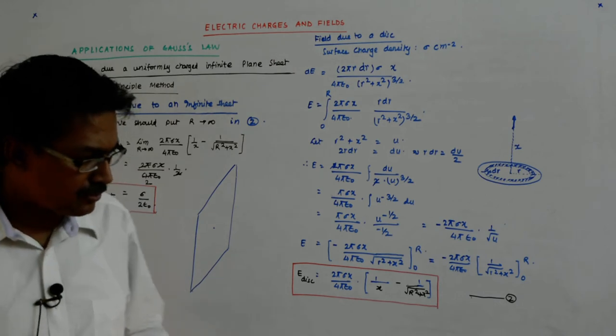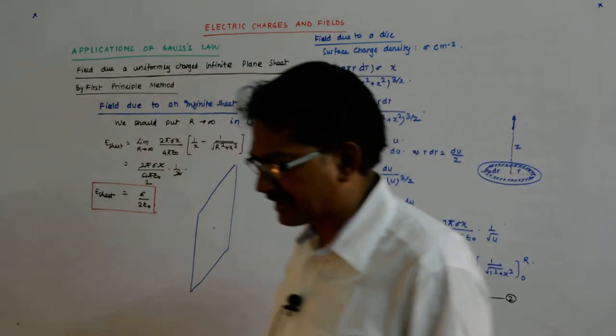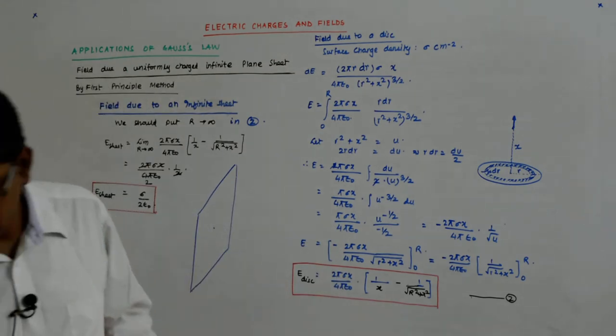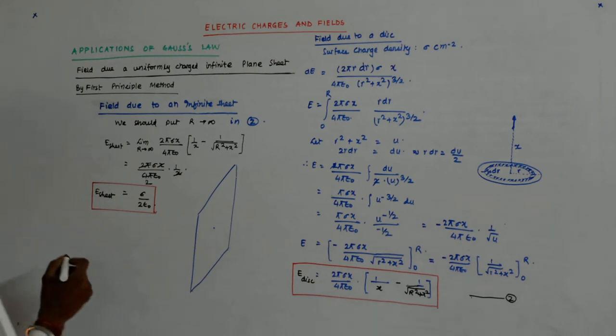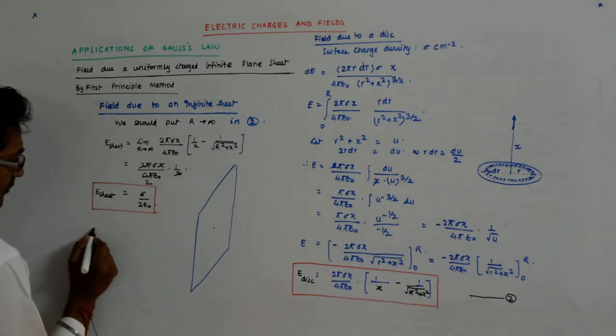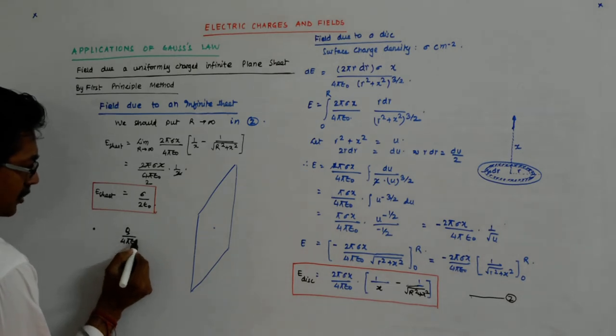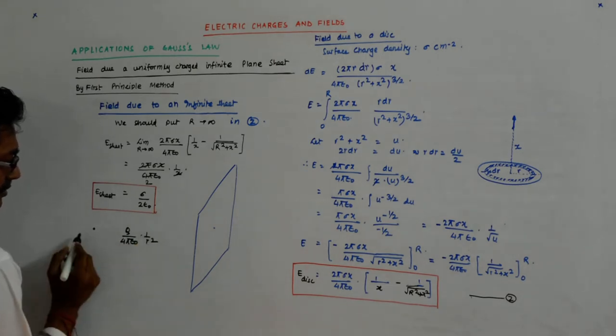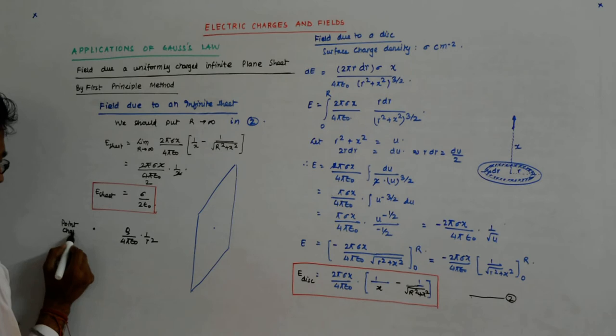It is an interesting thing to understand. Light also follows something like this. For a point charge, the field varies as q by 4π epsilon_0 times 1 by r squared. This is point charge.